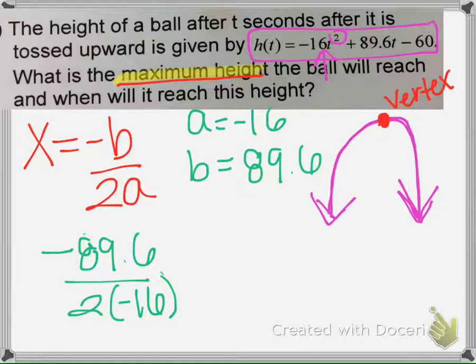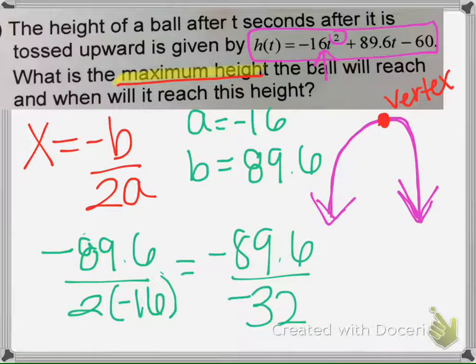Plugging in our a and b values, -89.6 divided by -32 equals 2.8. So that's what x is.